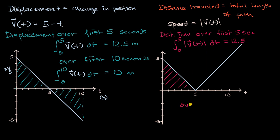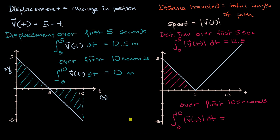For distance traveled over the first 10 seconds, that's the integral from zero to 10 of the absolute value of our velocity function. This gives the area of both triangles: five times five times one half, plus five times five times one half, which equals 25 meters. The particle has gone 12.5 meters to the right and then 12.5 meters back to the left. Your displacement — your net change in position — is zero, but the total length of path traveled is 25 meters.